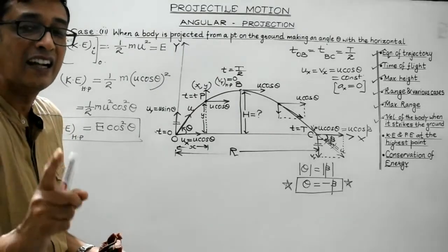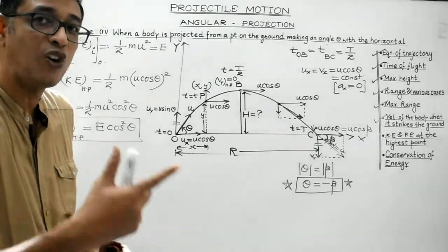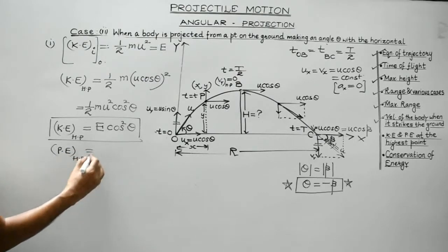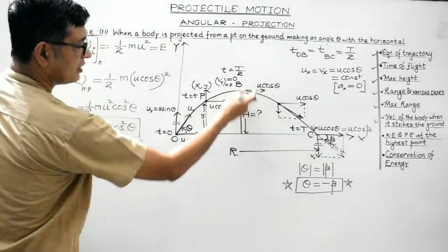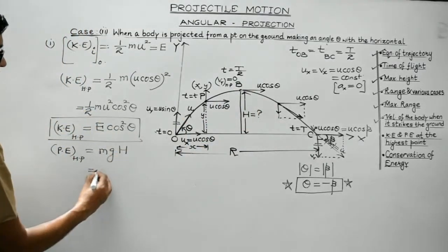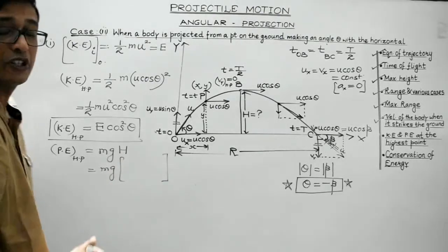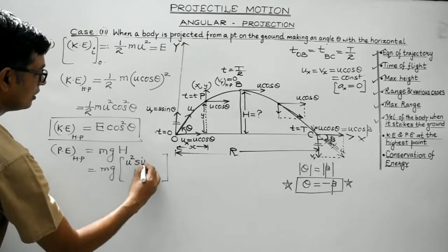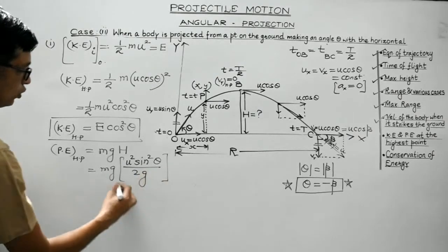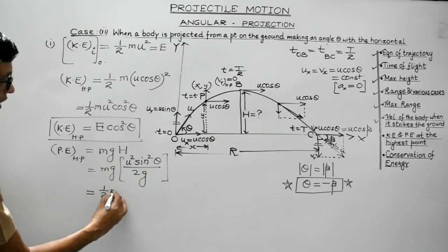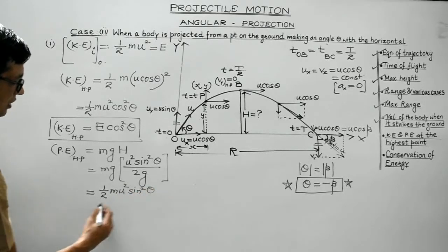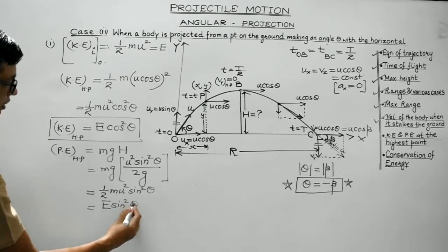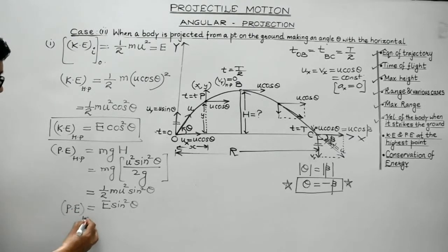Potential energy at the highest point = mgH = mg × (u²sin²θ)/(2g) = ½mu²sin²θ = E sin²θ. Total energy at the highest point = KE + PE = E cos²θ + E sin²θ = E(cos²θ + sin²θ) = E. This mathematically verifies conservation of energy: the total energy remains constant throughout the projectile's motion.